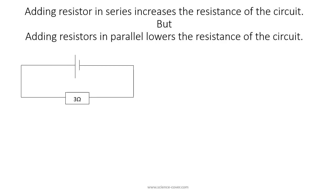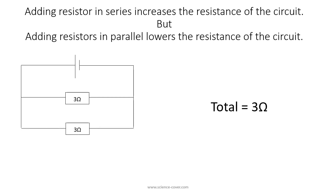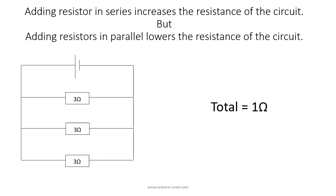Adding resistors in series increases the resistance of the circuit. But when you add resistors in parallel, it lowers the resistance of the circuit. With a single 3 ohm resistor the total resistance is 3 ohms. If I add a resistor in parallel, the total resistance decreases — it drops to 1.5 ohms. If I add a third 3 ohm resistor in parallel, the total resistance drops again to just 1 ohm. Each time I add a resistor in series I increase resistance; each time I add one in parallel I decrease resistance.